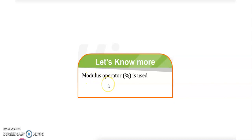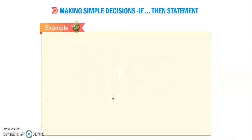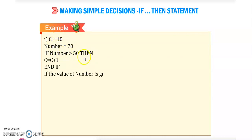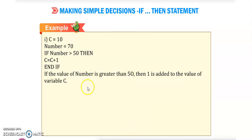The modulus operator is used to obtain the remainder when one number is divided by another. Here is a simple decision-making example: C is equal to 10, value of number is 70. If number is greater than 50, then it will increment the C variable by 1. If the value of number is greater than 50, then 1 is added to the value of the variable C.